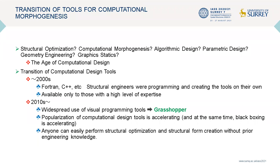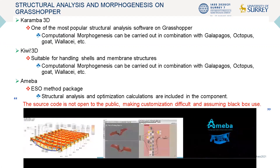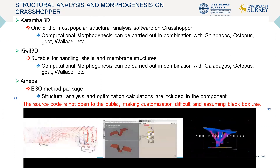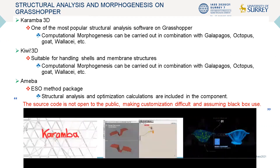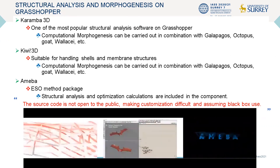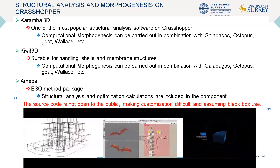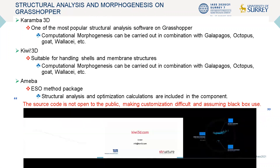On the other hand, in the 2010s, Grasshopper was developed as a visual programming tool on Rhinoceros. Grasshopper is very easy to learn, and since various computational design tools are now componentized to Grasshopper, there are a variety of components available for interactive structural analysis and computational morphogenesis — for example, Karamba, Kiwi, Amoeba, and so on.